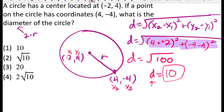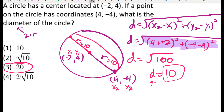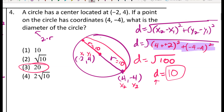Be careful: that distance of 10 represents the radius, not the diameter. The radius is only half the length of the diameter. So doubling 10 gives 20 for the length of the diameter of this circle.